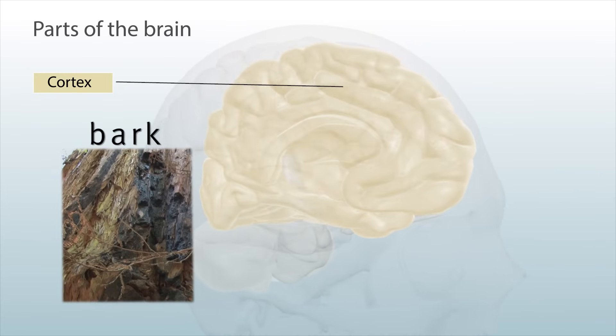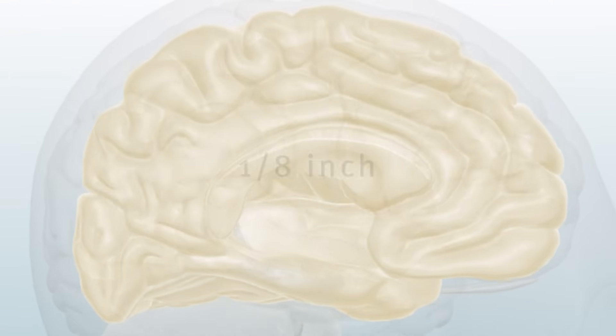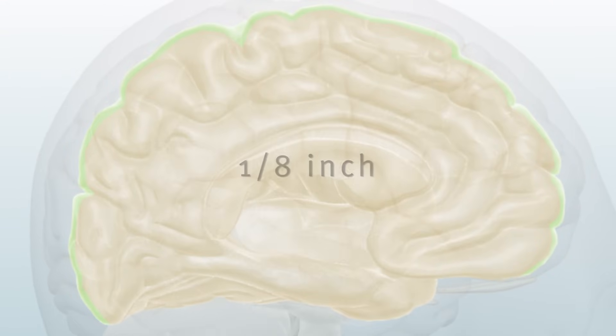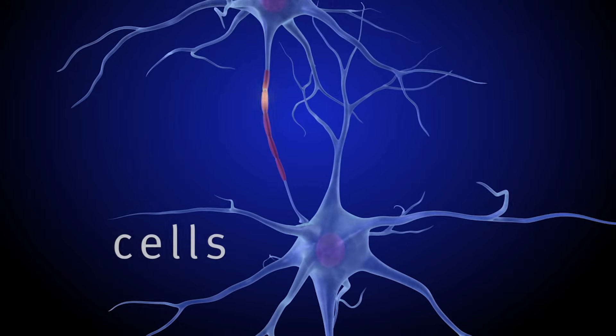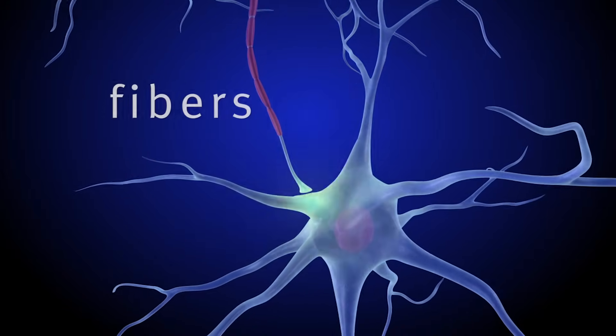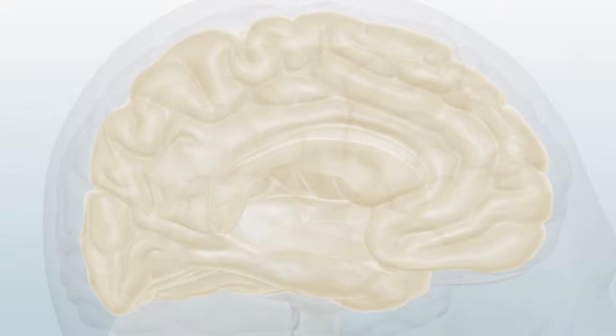Like a tree's bark, the surface is only one-eighth inch thick, but it also contains millions of cells with fibers that send messages to other brain areas.